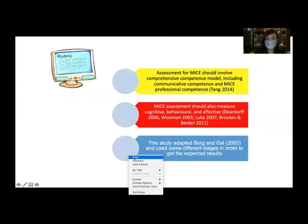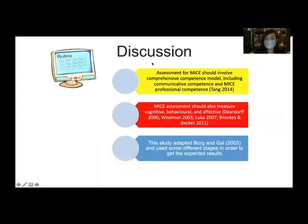In the discussion, we have revised the online MICE rubric which comprises communicative competence and MICE professional competence following Thiem 2014, which is really important to consider. Students perform MICE activity not only doing the task but they also have communication skills that they need to perform. Those competencies are also related to the cognitive, behavioral, and affective.